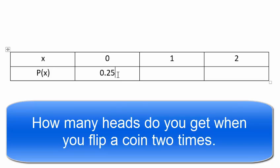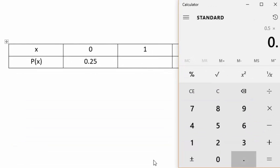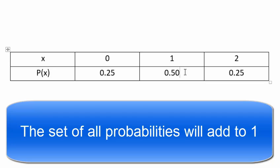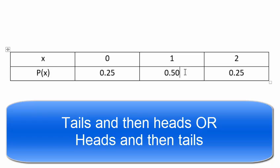If we flip the coin twice, the probability of getting no heads is 25%. Using that same math, 0.5 times 0.5 is 0.25, which is the probability of getting two heads. The last probability — getting exactly one head — has to be 0.50, because you could get heads then tails, or tails then heads, applying the OR rule.